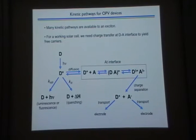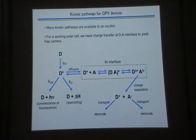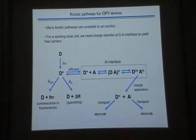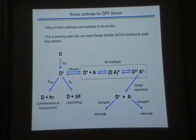A good way to examine the physics of these devices is through a kinetic diagram. We start with a donor material that we excite to form an exciton D*. Several processes can occur: we can emit a photon, decay to the ground state, or — hopefully — diffuse that exciton to an interface with an acceptor. At the interface, the exciton delocalizes across both donor and acceptor, undergoes partial charge separation to a delta-plus/delta-minus state, and then ideally achieves complete charge separation with transport to the electrodes. We want to drive this process to completion with high efficiency.